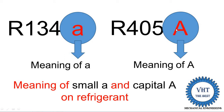Capital 'A' indicates it is an azeotrope refrigerant. Azeotrope means this refrigerant is made by mixing two or more refrigerants. For example, R405A is made from difluoroethane plus pentafluoropropane. These are made by combining two or more refrigerants, and then it is known as an azeotrope refrigerant.